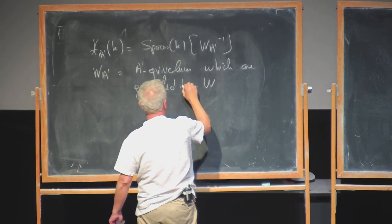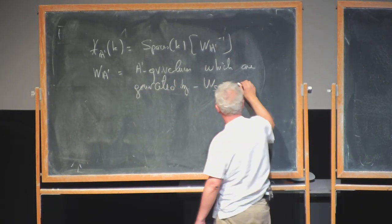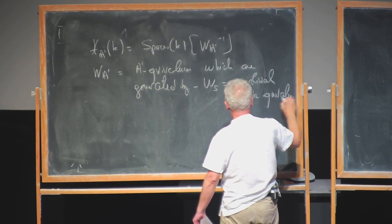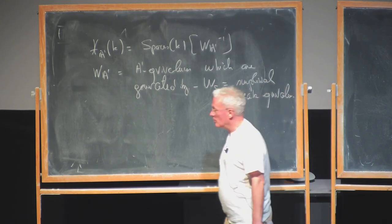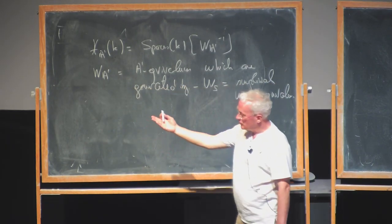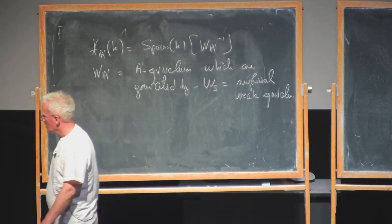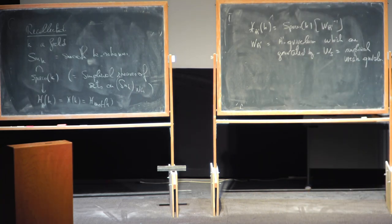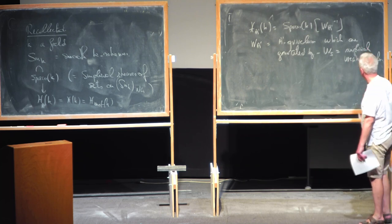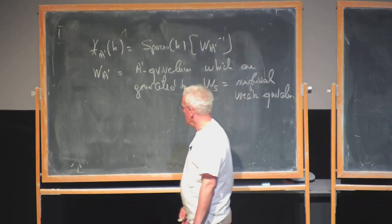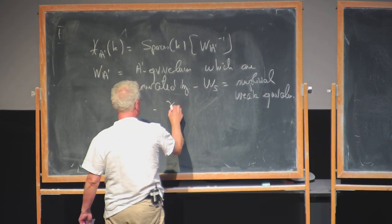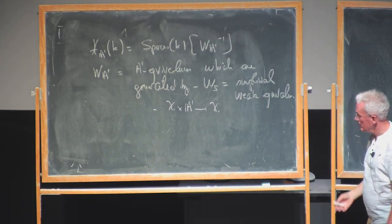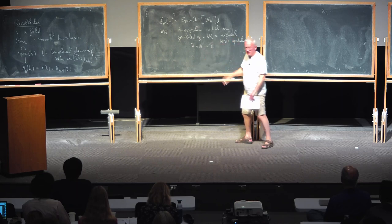The first idea is local or simplicial weak equivalences: a morphism between two simplicial presheaves is a simplicial weak equivalence if, when you evaluate on each Nisnevich point, it gives a map of simplicial sets that is a weak equivalence for each point. This is technical but well known — it was already in SGA. The second idea is that the projection X × A1 → X should be an A1 weak equivalence.